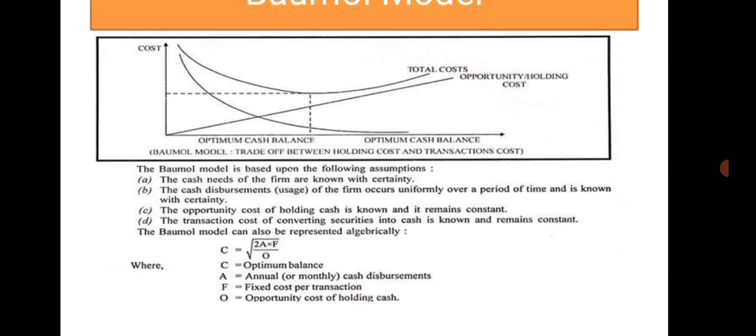The Baumol model is based on the following assumptions: the cash needs of the firm are known with certainty, cash disbursements occur uniformly over a period of time and are known with certainty, the opportunity cost of holding cash is known and remains constant, and the transaction cost of converting securities into cash is known and remains constant.